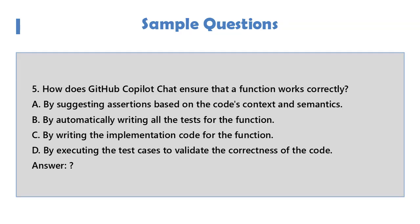Question 5: How does GitHub Copilot Chat ensure that a function works correctly? A. By suggesting assertions based on the code's context and semantics. B. By automatically writing all the tests for the function. C. By writing the implementation code for the function. D. By executing the test cases to validate the correctness of the code.